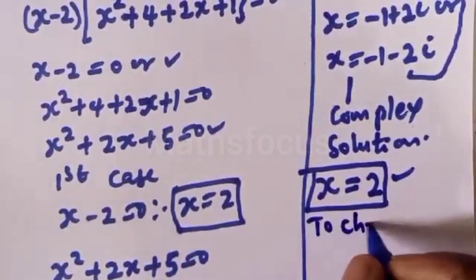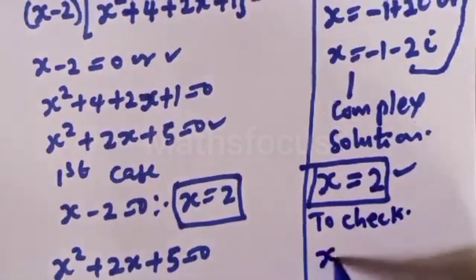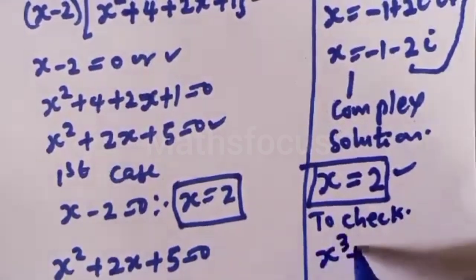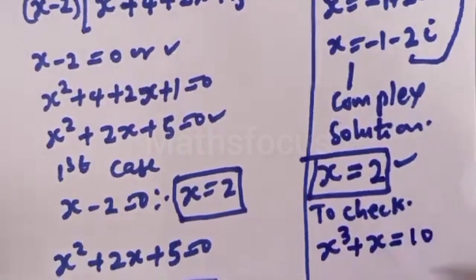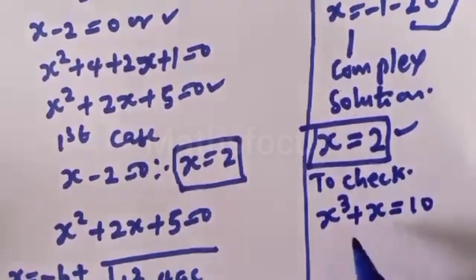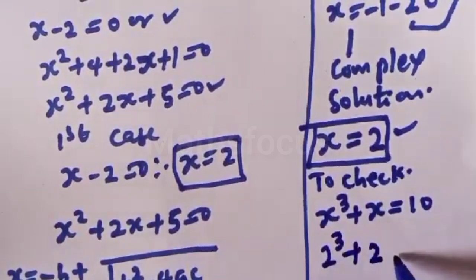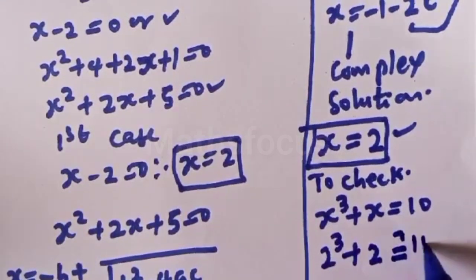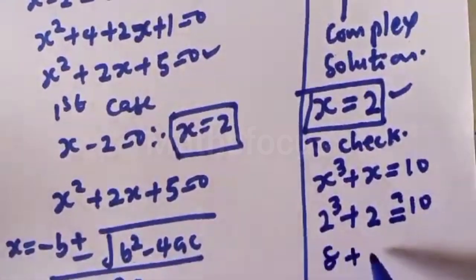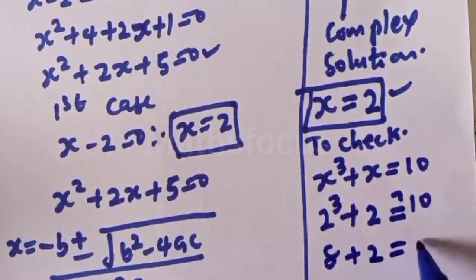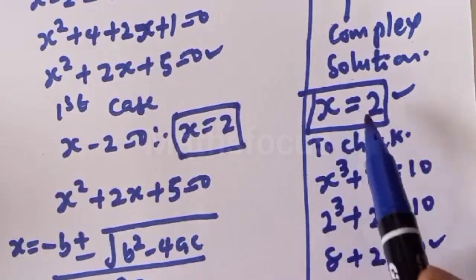To check: we have s raised to power 3 plus s must equal 10. When s equals 2, this is 2 raised to power 3 plus 2, which must equal 10. 2 raised to power 3 is 8, plus 2 equals 10. This satisfies the given equation at s equal to 2.